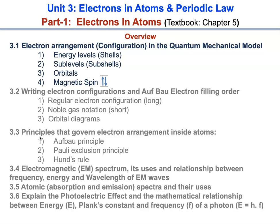In 3.4 we are going to learn about the electromagnetic or EM spectrum, its uses, the types of energy found there, and the relationship between frequency, energy, and wavelength of EM waves — so we will be doing some calculations. In 3.5 we will learn about atomic absorption and emission spectra and their uses. In 3.6 we are going to explain the photoelectric effect and the mathematical relationship between energy, Planck's constant, and frequency of a photon using the equation: energy equals Planck's constant times frequency.